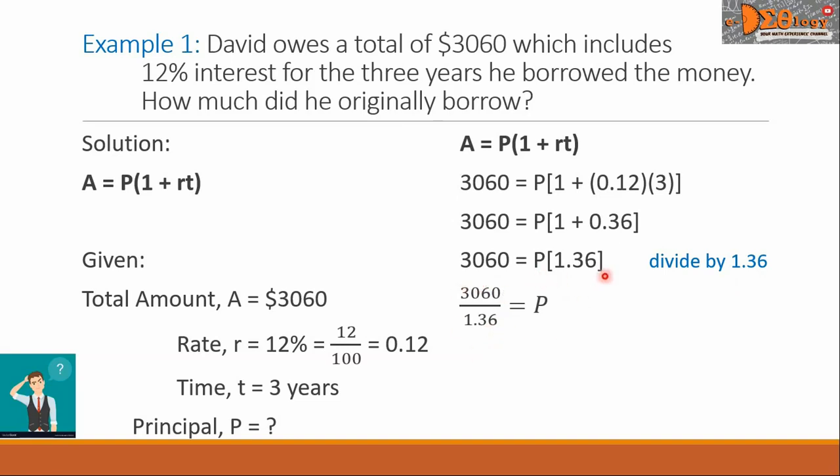And our right side, if we divide this by 1.36, the decimal will cancel out, only the letter P comes down. And then we will take the coefficient of this, it will be 2250, and that is the P, or principal.